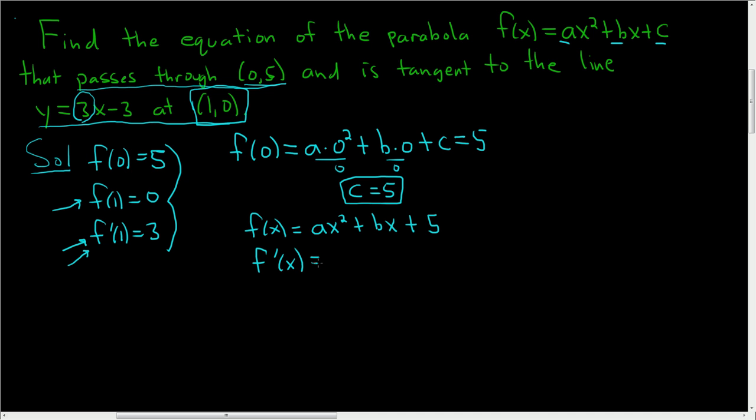So f'(x) = 2ax + b. The derivative of bx is b - think about this: the derivative of 2x is 2, the derivative of 3x is 3, so the derivative of bx is just b, since b is a constant. And the derivative of 5 is 0, so we didn't write it.